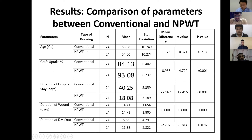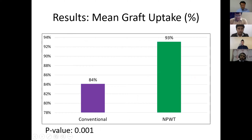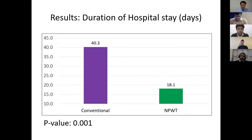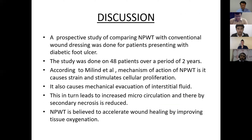My second objective is the duration of hospital stay. The duration in the conventional dressing group is more — about 40 days — whereas in the negative pressure wound therapy group it is about 15 to 18 days. The p-value is again very significant at less than 0.001. The mean graft uptake is 84% in conventional dressing versus 95% in negative pressure wound therapy. The bar chart clearly shows the negative pressure wound therapy group has significantly fewer days of hospital stay.